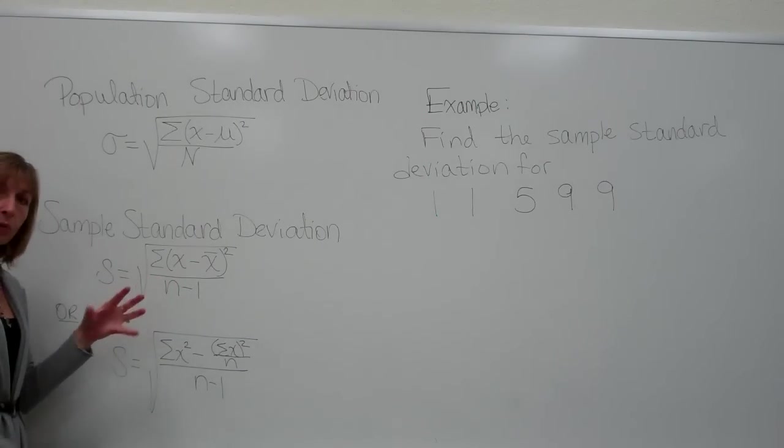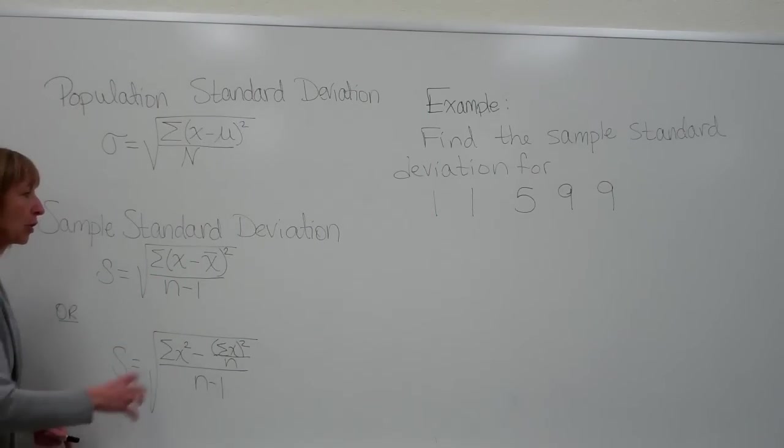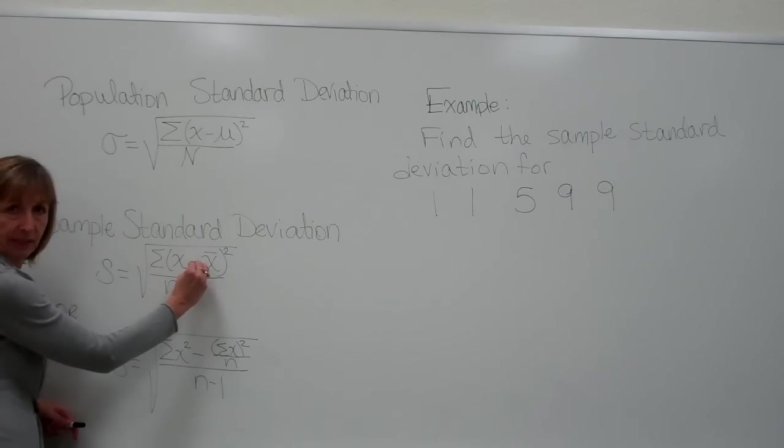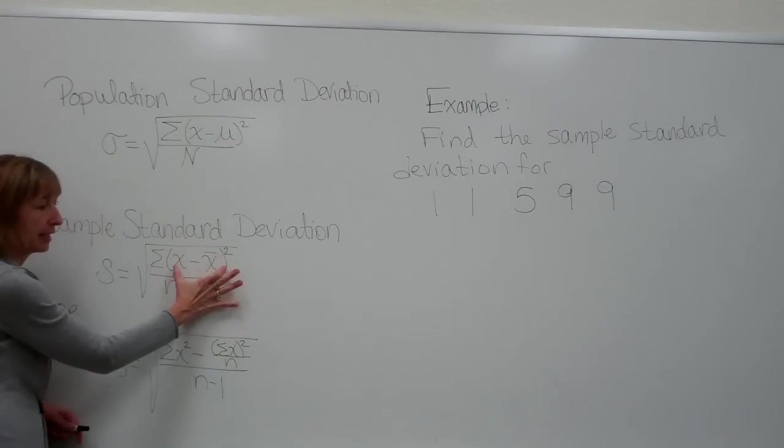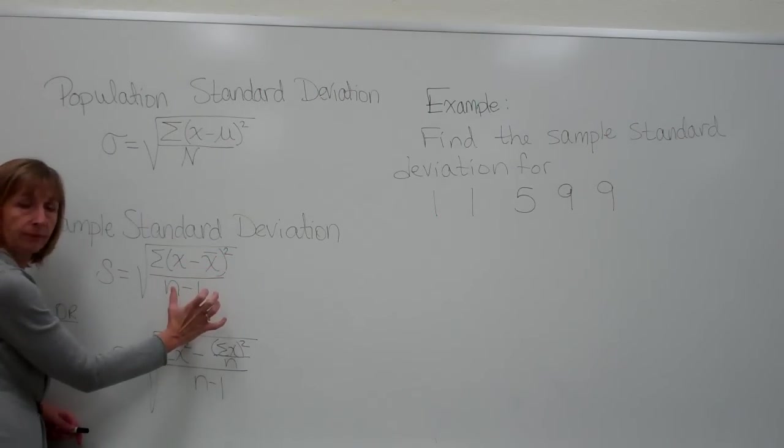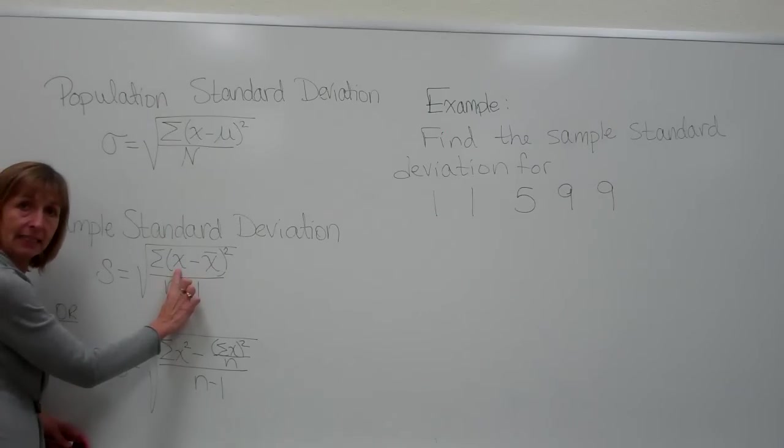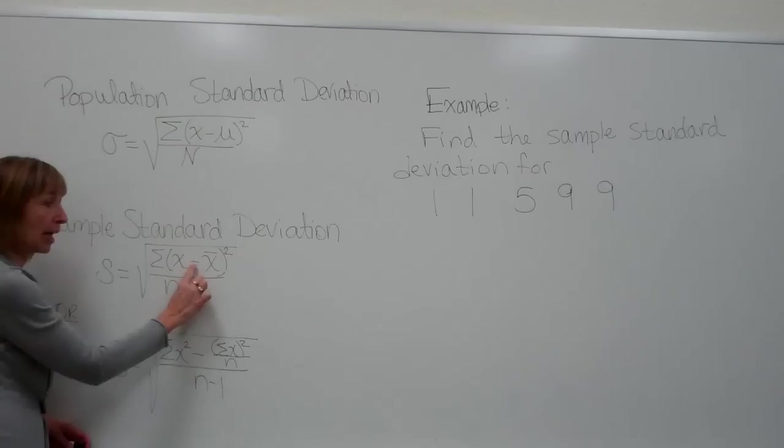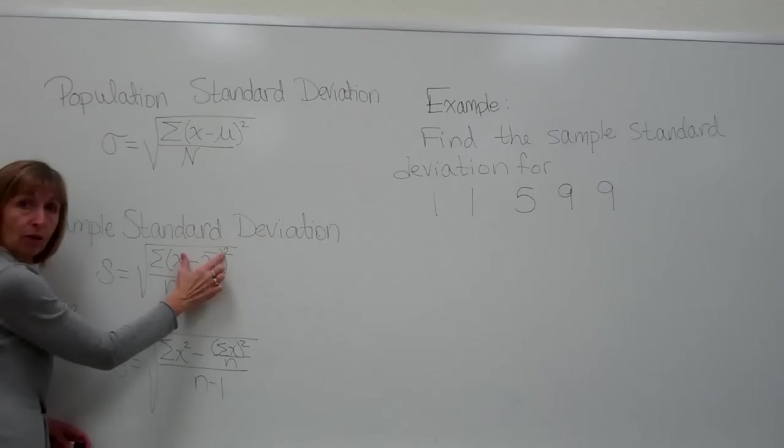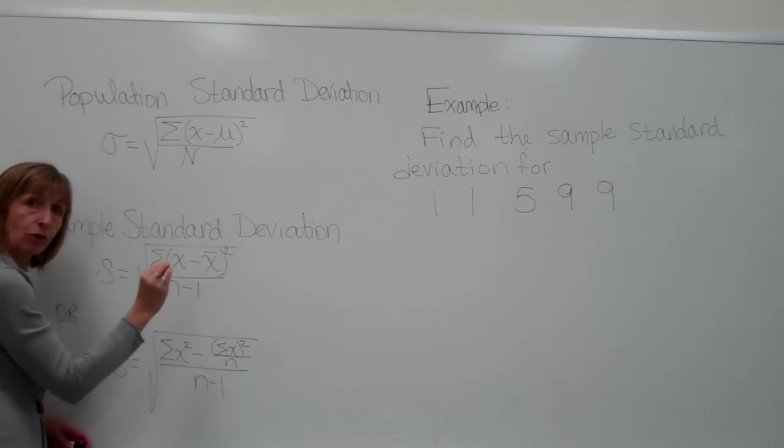First of all, notice that when we have a mixture of operations, we're supposed to do the operations inside the parentheses first. What the notation is telling us inside these parentheses is x minus x with a bar over it in a quantity that's being squared. Well, x is representing an individual data value, and the x with a bar over it is denoting the sample mean. So for each data value, we will subtract off the sample mean and we'll get a number.